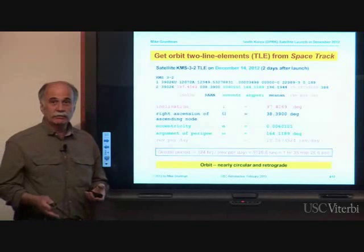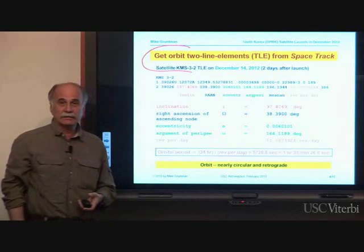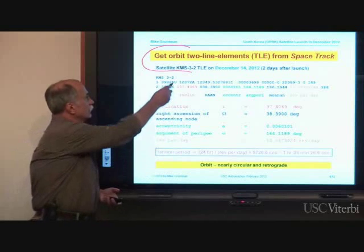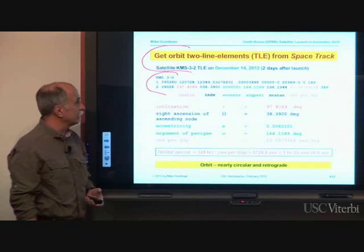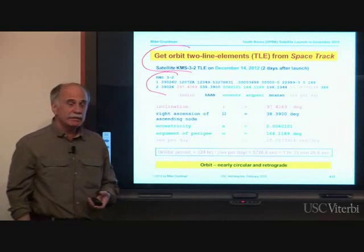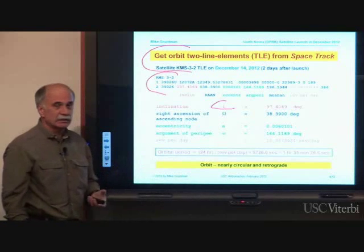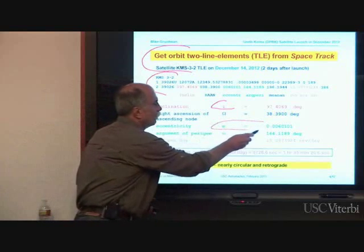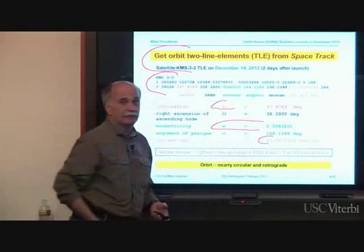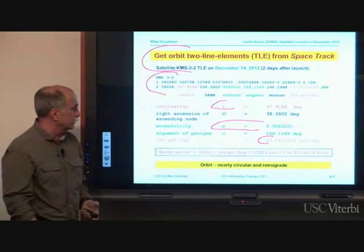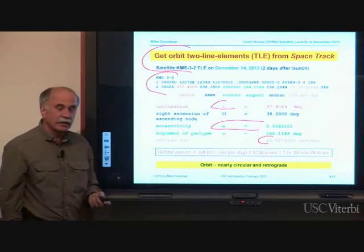The first thing we need to evaluate this launch: we go and get the two-line elements of the orbit, known as TLEs, and anybody can get them from Space Track. These two-line elements were obtained two days after the launch, on December 14th. From them we can immediately see that the inclination of the satellite orbit was 97 degrees, eccentricity was 0.006, and the satellite completed slightly more than 15 revolutions per day. From that last number we can establish the orbital period: one hour, 35 minutes, and 26 seconds. The orbit is nearly circular and retrograde.